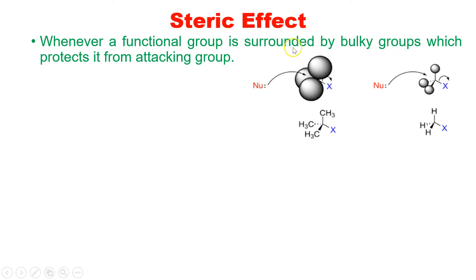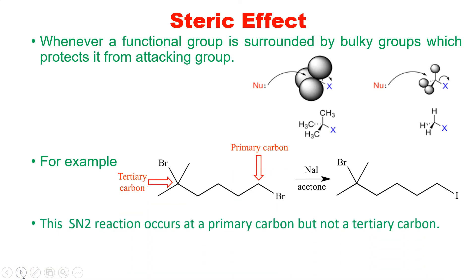The functional group X is surrounded by bulky groups which protect it from the attacking nucleophile. This reaction is a nucleophilic substitution reaction. SN2 reactions occur at primary carbons but not at tertiary carbons. SN2 involves a backside attack — the nucleophile enters from the back of the carbon. In the tertiary case this is not possible, but in a primary carbon with small hydrogen atoms, there is very limited steric hindrance.